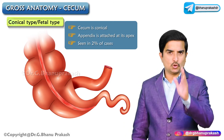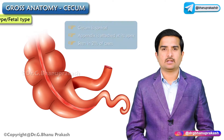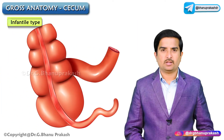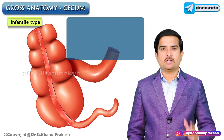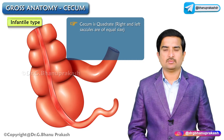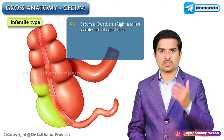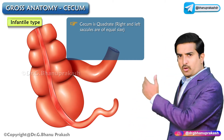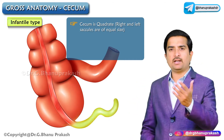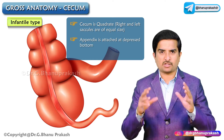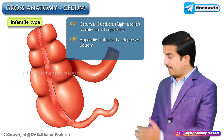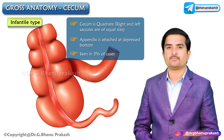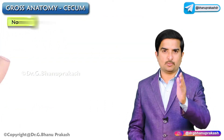The conical type is seen in 2% of cases. The second type is called the infantile type. Here the cecum is quadrate, meaning the right and left saccules are of equal size, giving it a quadrate shape. The appendix is attached at the depressed bottom, and this type is seen in approximately 3% of cases.